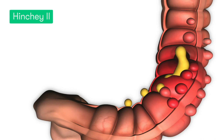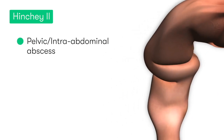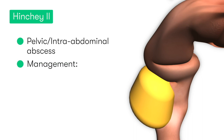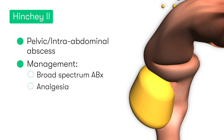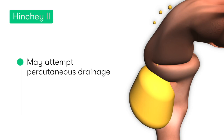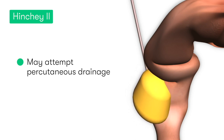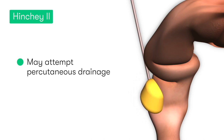In Hinchy 2, the patient has developed a collection or abscess sitting in their pelvis. The initial management is pretty much identical to the earlier classifications; however, in some cases, particularly if the patient is not improving, we may have to ask our radiology colleagues to perform a percutaneous drainage of the pelvic collection. Getting rid of the pus usually allows the patient to settle and recover completely.